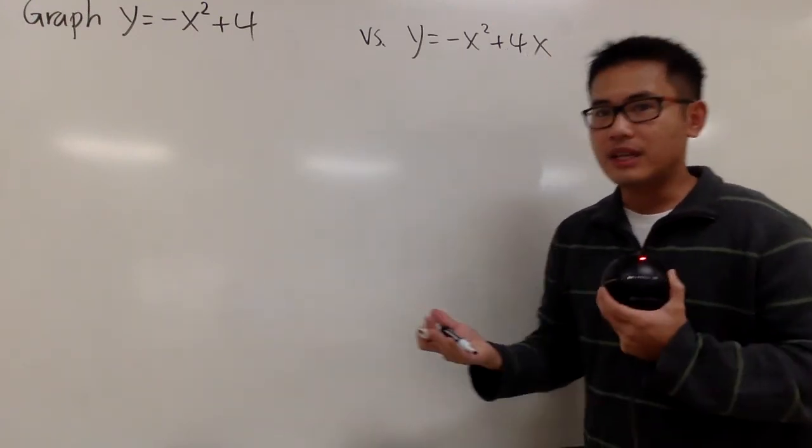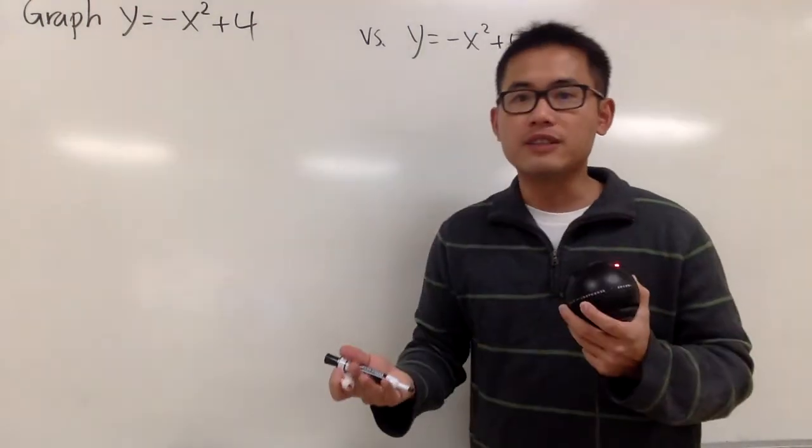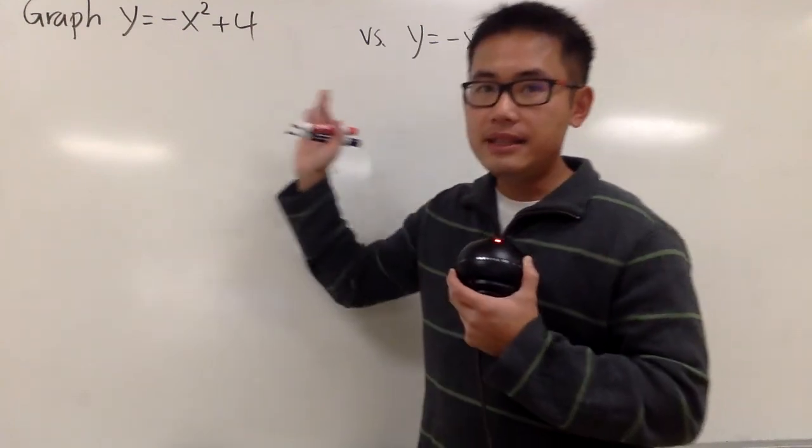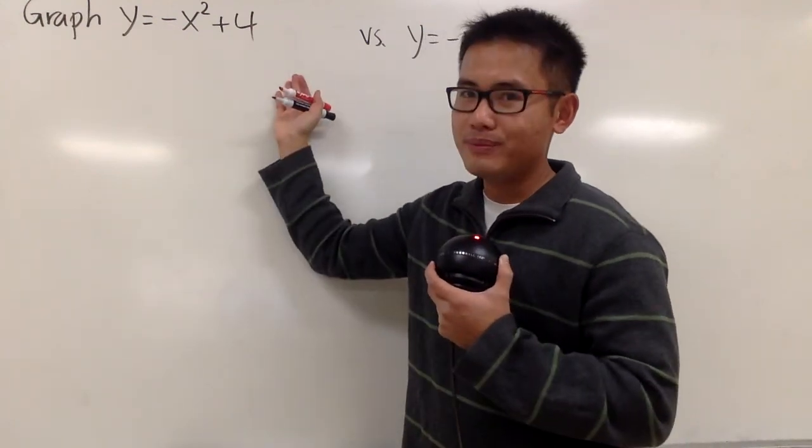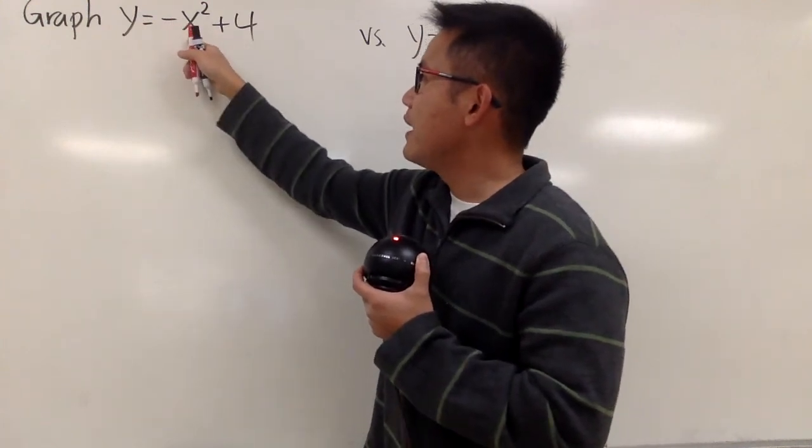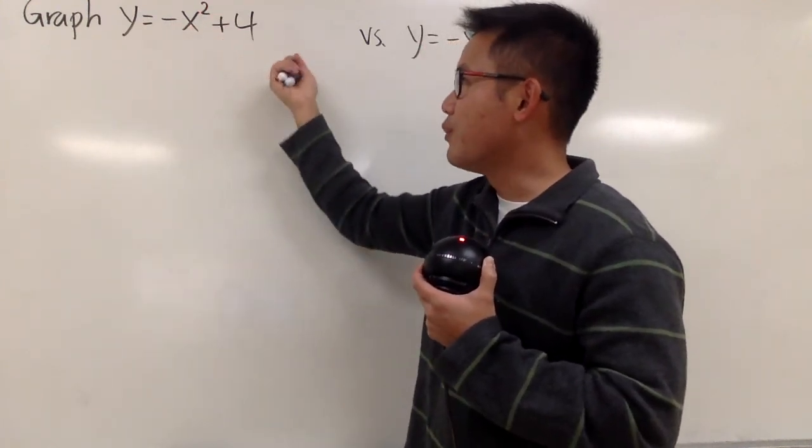But anyway, let's go ahead and find our vertex first. And if you want to use the vertex formula, you have to remember, you have to find out the correct b value. And in this case, what's the b value? Well, there's no x term, right? Because you see, this is negative x squared plus 0x, and then plus 4.